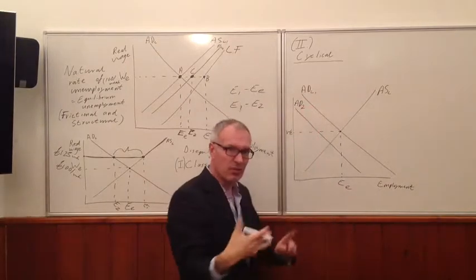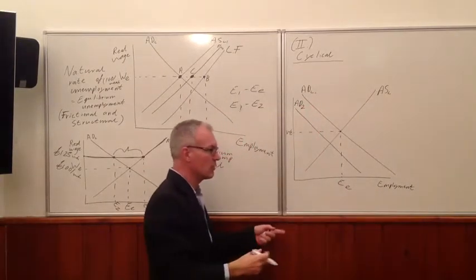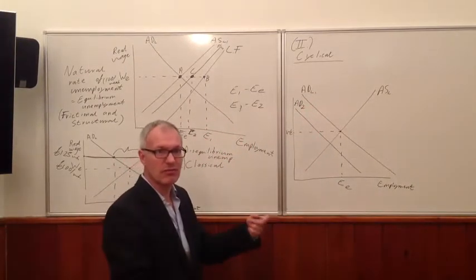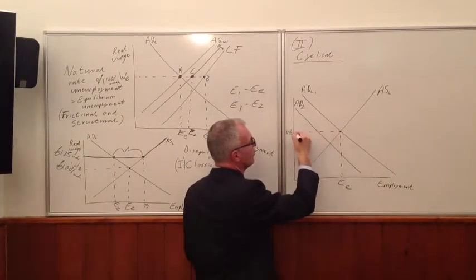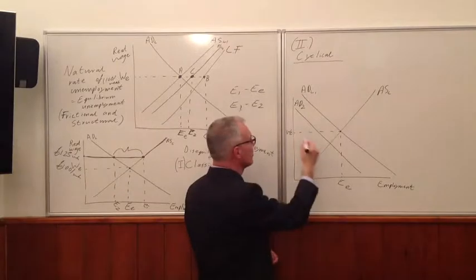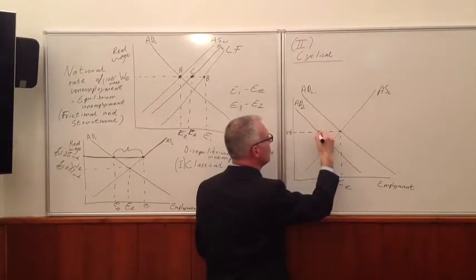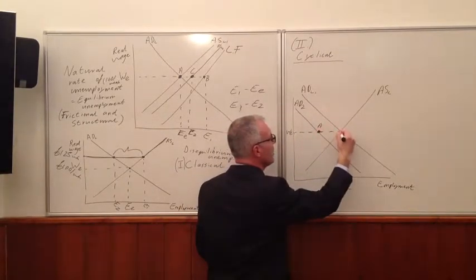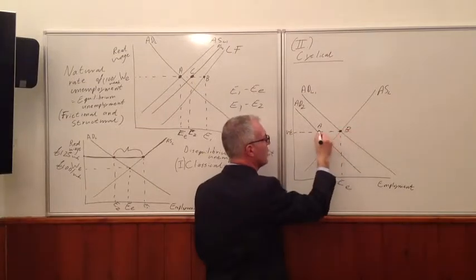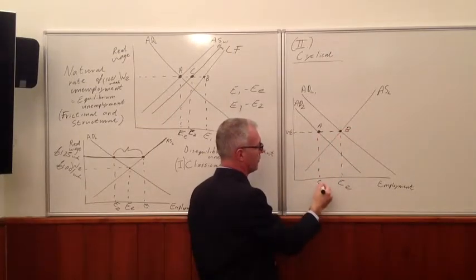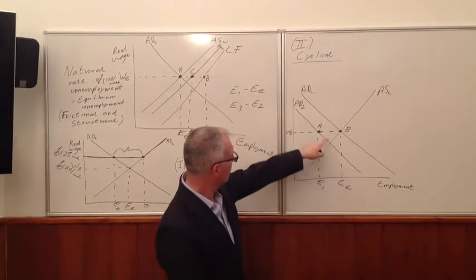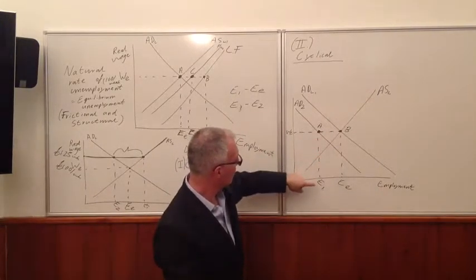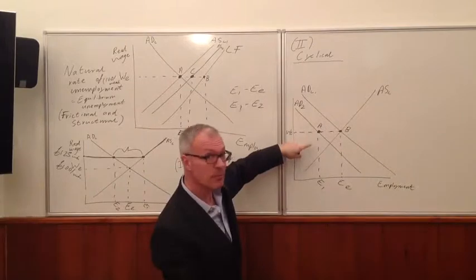Remember labour is a derived demand, so if the aggregate demand of the whole economy shifts to the left, so will the aggregate demand for labour. And then at the prevailing wage rate, we end up with this unemployment A-B. And so we now have unemployment E1 to E-E. And we have a fall in employment.